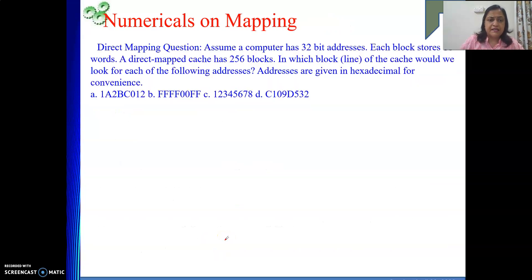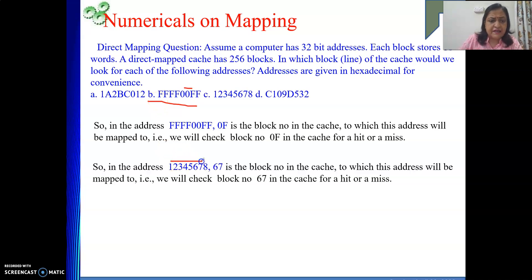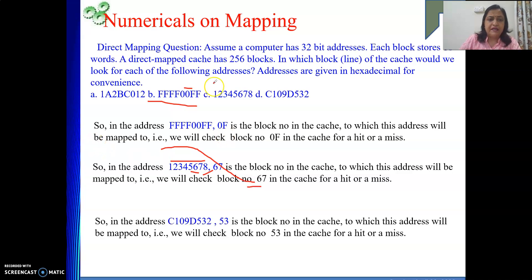Coming to the next address: the second and third lower-order hex digits are 0F, so 0F is the block number to which that address will be mapped. For the third address, 8 is the offset and 6, 7 is the block number. For the last address, 5 and 3 are the block number to which that address is mapped in cache memory.